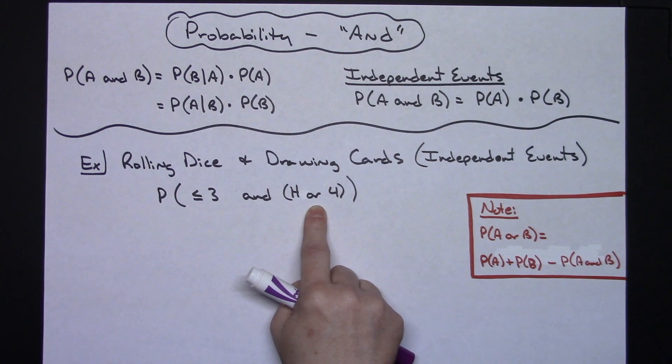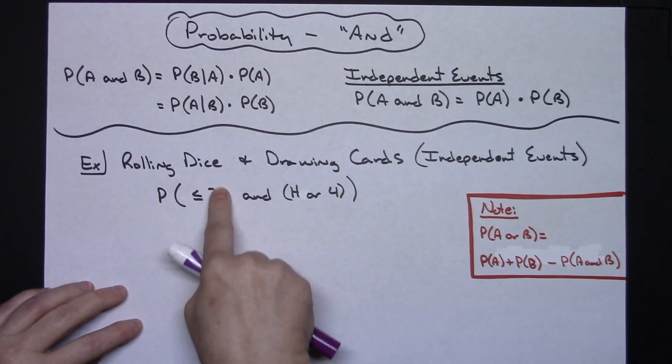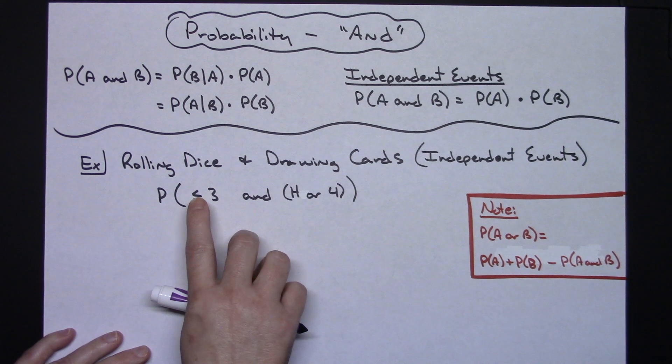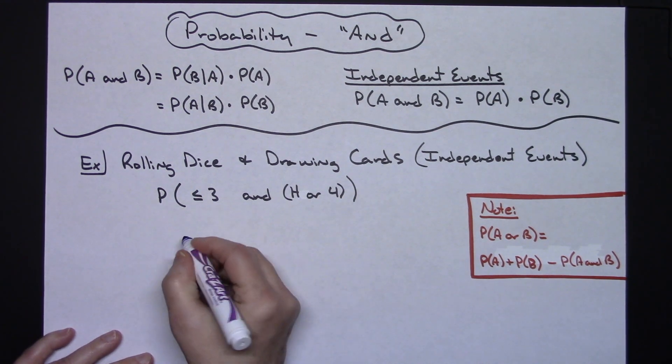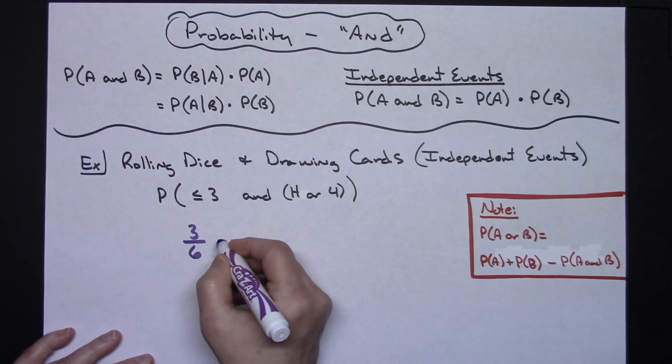I'm going to focus on the dice first. Less than or equal to three on a dice - that would be three possibilities over the six possibilities on the dice total.